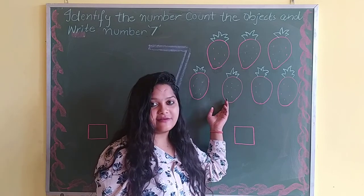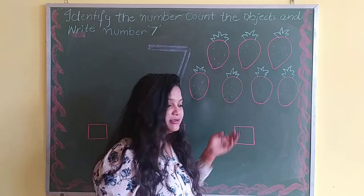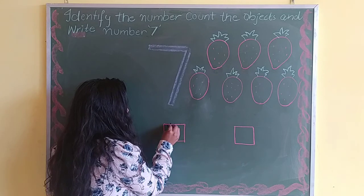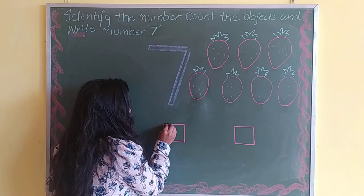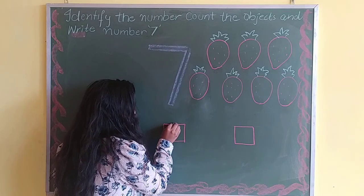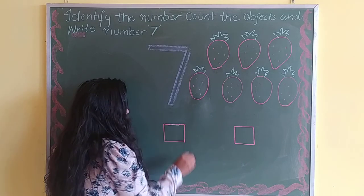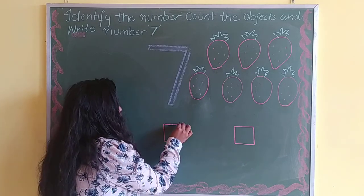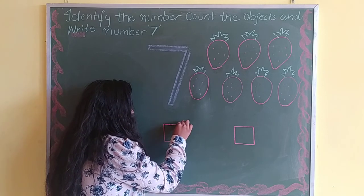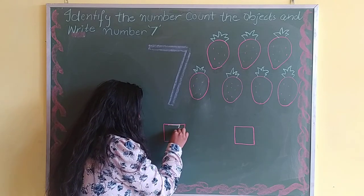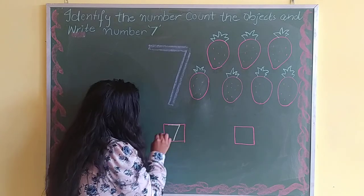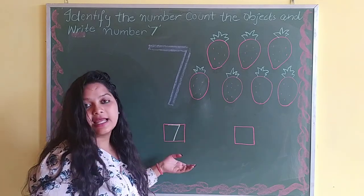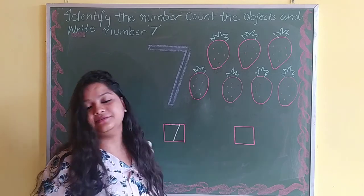Now we will write number 7 on the board. First we will make a slipping line like this. From here we will make a slanting line like this. Number 7.